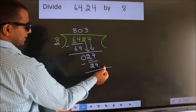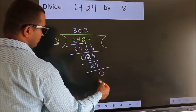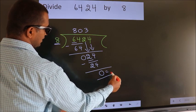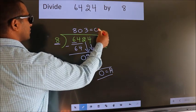No more numbers to bring it down. So, we stop here. This is our remainder. This is our quotient.